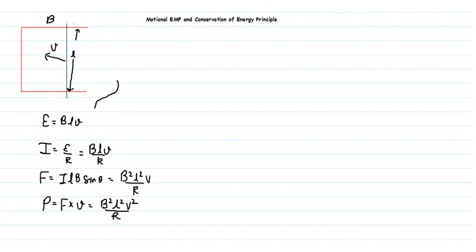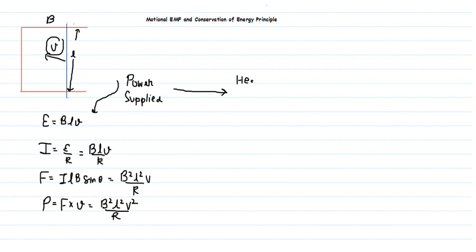Please remember this formula — this is the power supplied by us so that the conductor can move with constant velocity. Now, where does this power go? Since velocity is constant, kinetic energy is not increasing, so the power I supplied must be converted to heat energy.